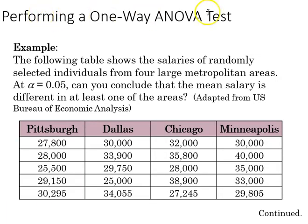If we're going to perform a one-way ANOVA test, here's an example. We have a table here with salaries of randomly selected individuals from four large metropolitan areas: Pittsburgh, Dallas, Chicago, and Minneapolis. We want to know at the 0.05 level, can we conclude that the mean salary is different in at least one of the areas?